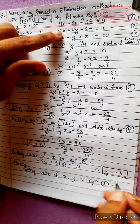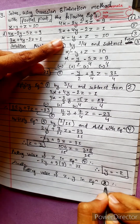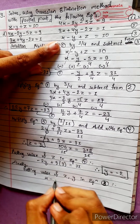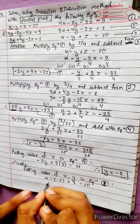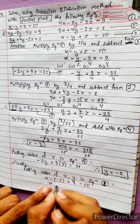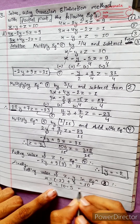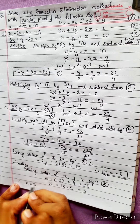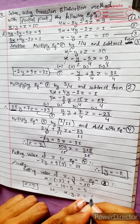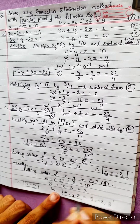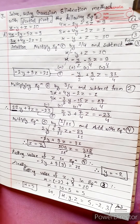Finally, substituting y equals minus 2 and z equals 3 into Equation 3 (x minus y plus z equals 10): x minus (minus 2) plus 3 equals 10, so x plus 2 plus 3 equals 10, meaning x equals 10 minus 5 equals 5. Therefore x equals 5. The overall solution is x equals 5, y equals minus 2, and z equals 3.